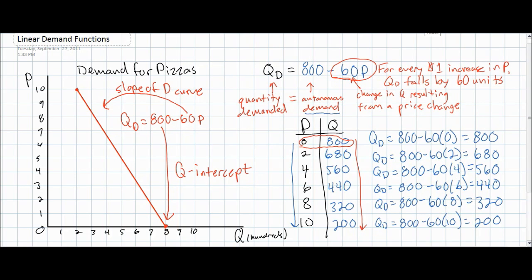In our next video lecture, we will explore what happens to a demand curve, a demand function, and a demand schedule when either the A value — known as the Q intercept or the autonomous level of demand — changes, or when the B value — which is the slope indicating the responsiveness of consumers to changes in price — changes. How will this affect the demand curve when one of these two variables changes? That will be our next lecture.